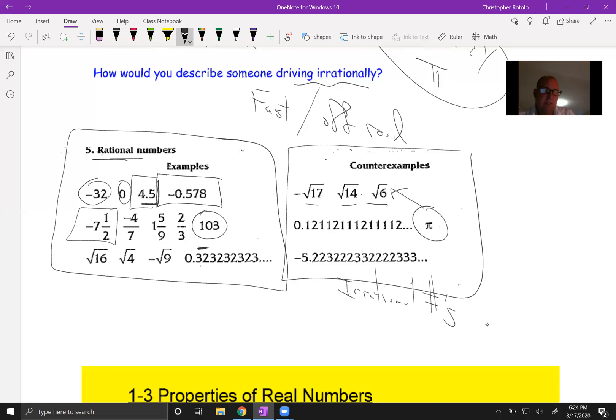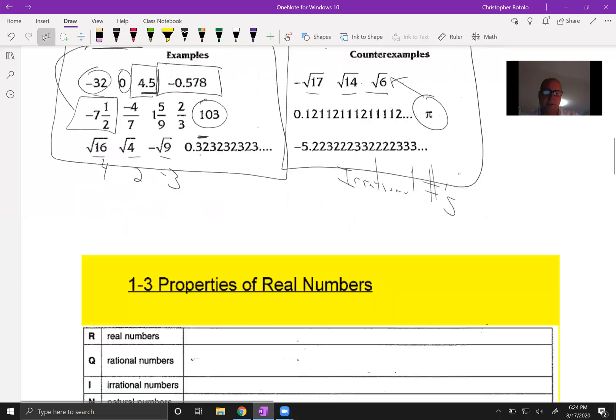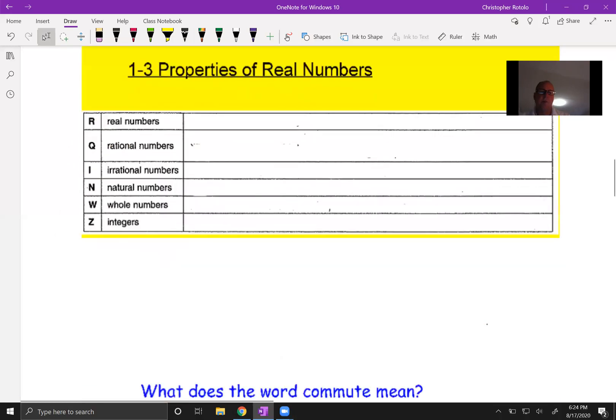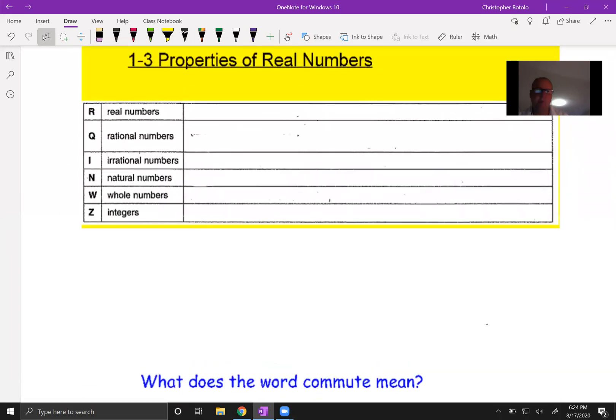These guys here, they just stop. We call that terminate. So if it repeats or terminates, then it is a rational number. If I can make a fraction out of it, it is a rational number. Remember these square root guys? These things here are perfect squares. This is four, this is two, this is negative three, so they're okay. So really want to take a look at those examples versus counterexamples and go back and forth.